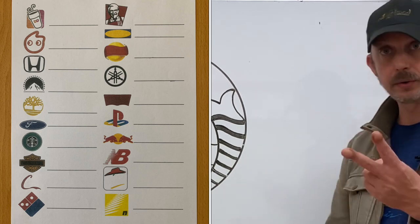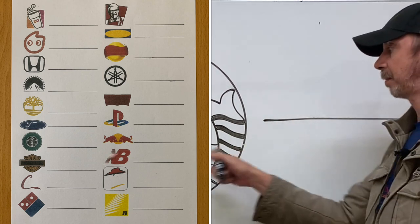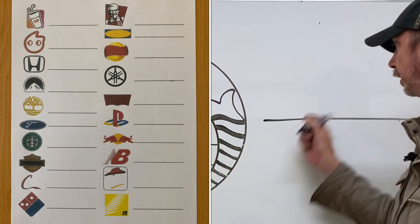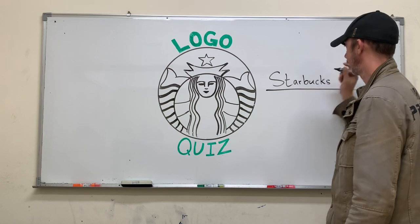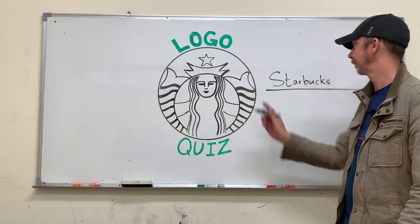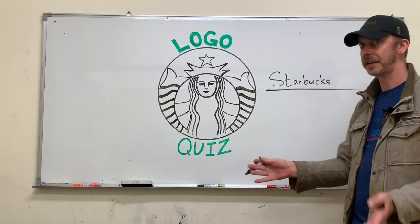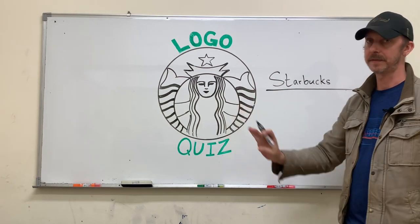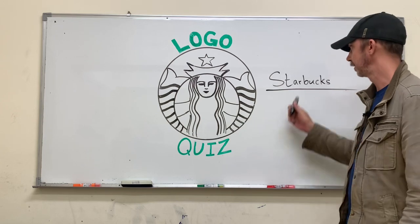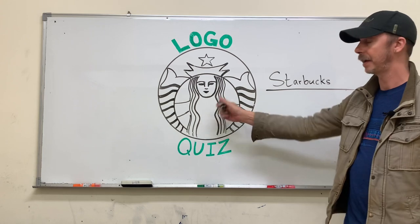The way that I play is on each one of these lines there's room to write two things. The first thing that they're going to write, if they know it, is the name of the company. So if we look back at the whiteboard, they're going to write Starbucks if they know that that is the name of this company. I also tell them for each one of these logos, you're going to write two things: the first thing is the name if you know it, and the second thing would be something that they sell.